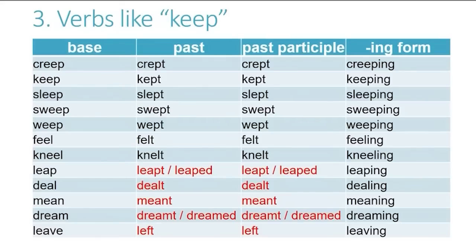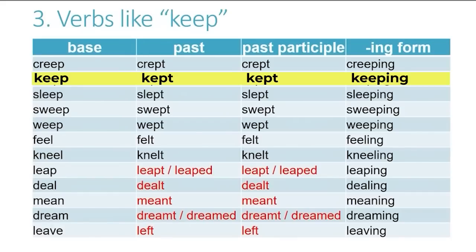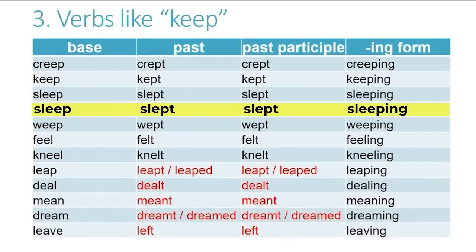Let's look at some examples. When we go from the base form to the past and past participle, it follows the same pattern as the ones we did before — the long e shifts to a short e sound. The difference here is they add a final t. Creep, crept, crept. Keep, kept, kept. Sleep, slept, slept. And so forth.